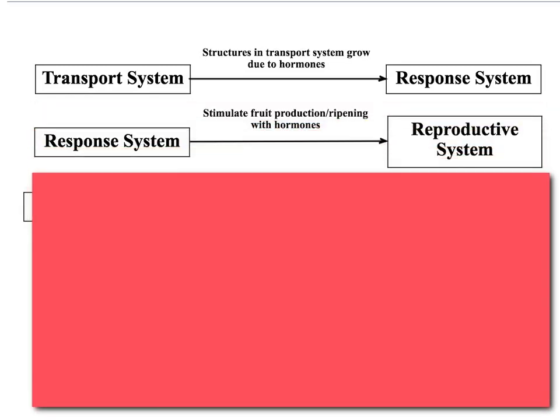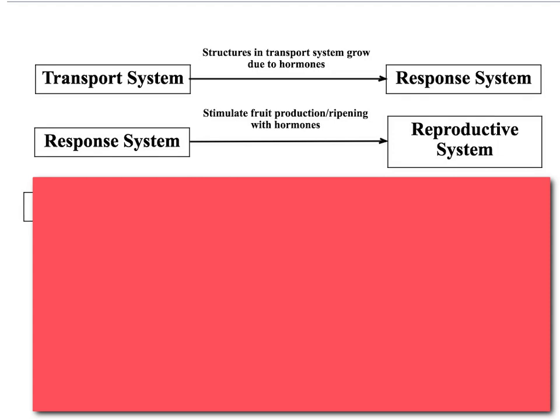The next interaction is the response system and the reproductive system — how do these two interact? The response system is responsible for hormones, and the reproductive system is responsible for fruit. There are certain hormones that stimulate fruit production. You're going to need to look back at your notes on tropisms and hormones in plants and figure out which hormones stimulate fruit ripening in the reproductive system, because there are hormones that do that — but it's your job to go find that.